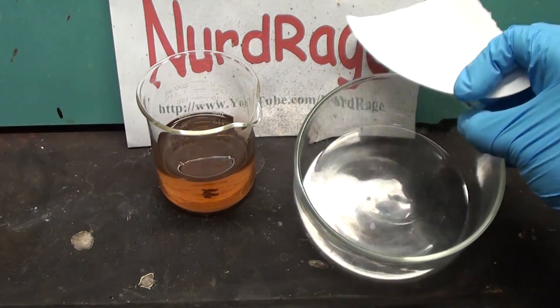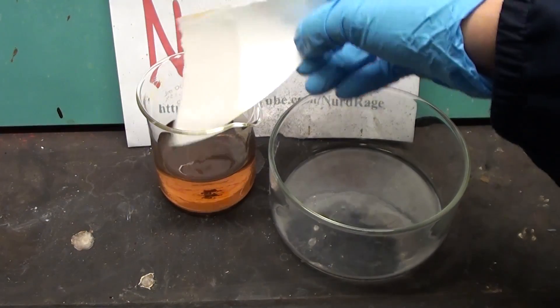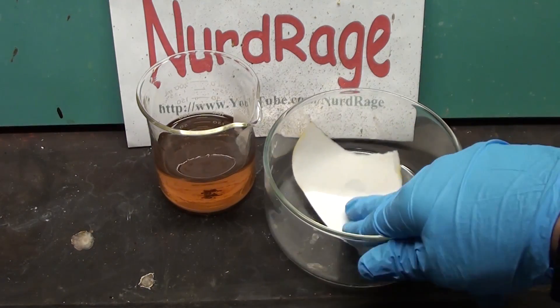Now get a sheet of filter paper and wet it with our solution. This is our test paper and must be freshly made as the rhodosinate decays after about an hour.